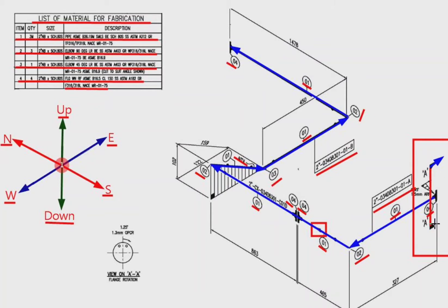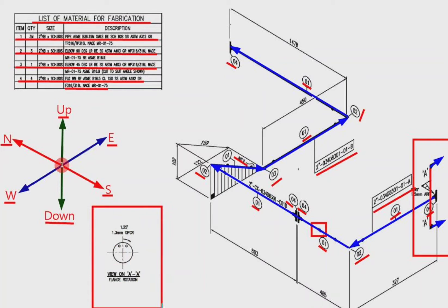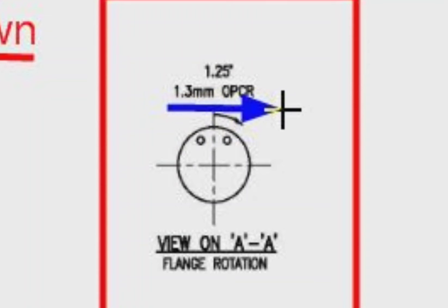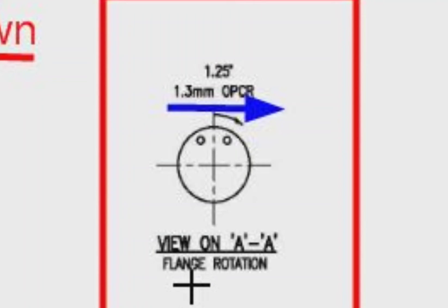Section AA. This view is explained here. The view AA shows that the holes of the flange will rotate to the right by 1.3 millimeters.